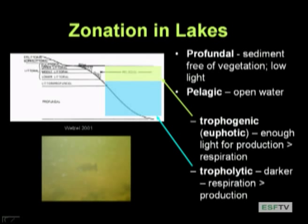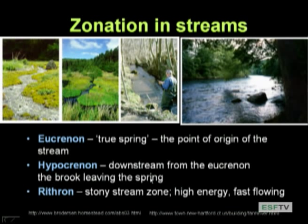In streams we have some slight differences. In an idealized stream, we have a true spring or eucranon — the point of origin. The hypocranon, just below that, often has very constant water temperature because the water is coming from groundwater, but you start getting more sun influence heating the water as you move down. Then we get to the rithron, or stony stream zone — what trout fishermen can probably relate to — where water is still cold but fast-flowing, with nice habitat for salmonids.